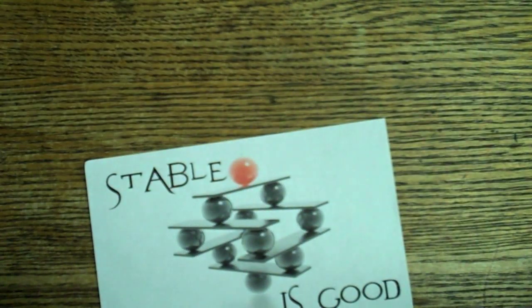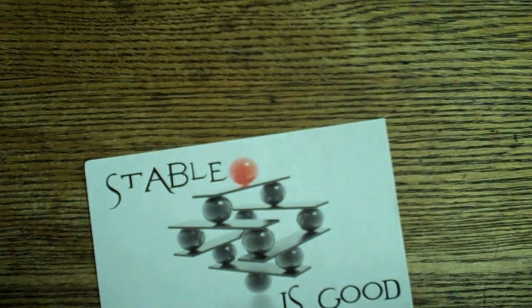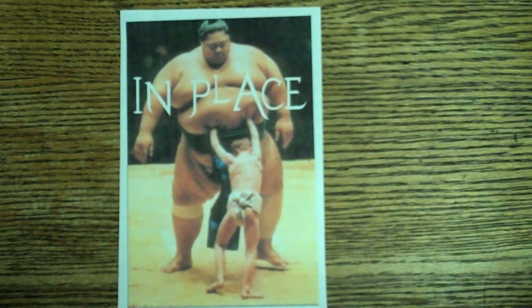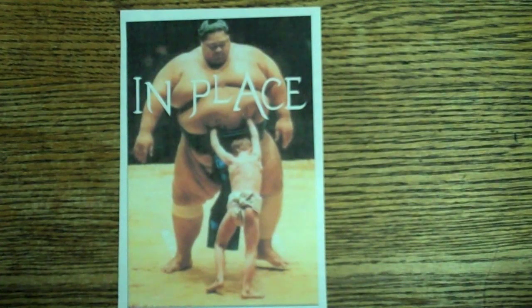This algorithm is called stable because it does not change the relative order of elements with equal keys. It only requires a constant amount, O(1), of additional memory space. This is what's known as an algorithm being in place.